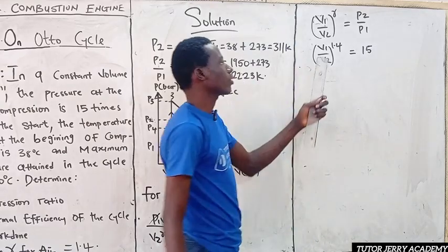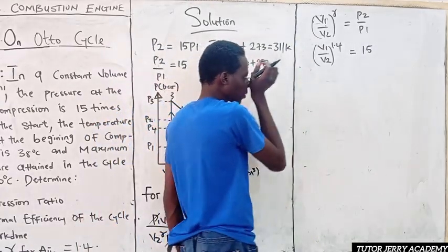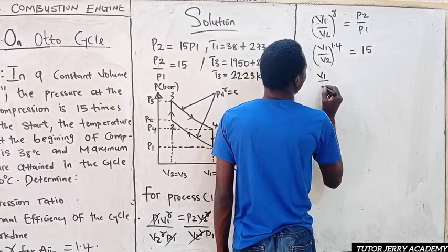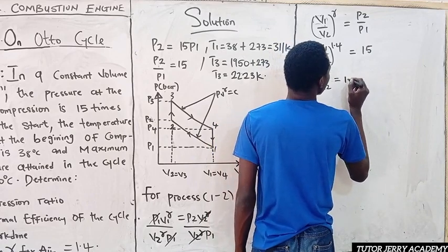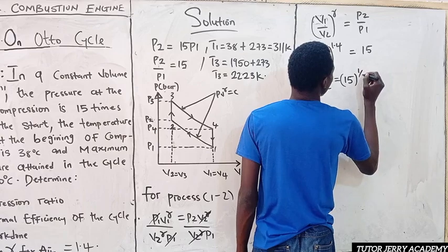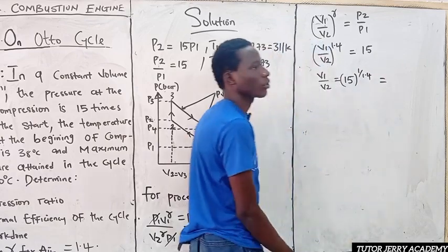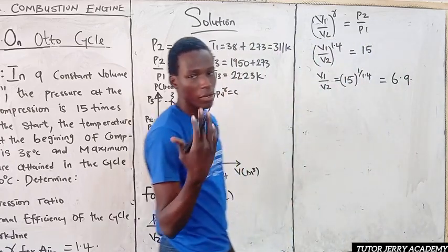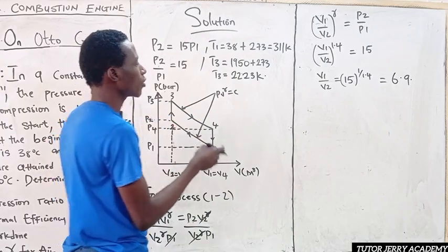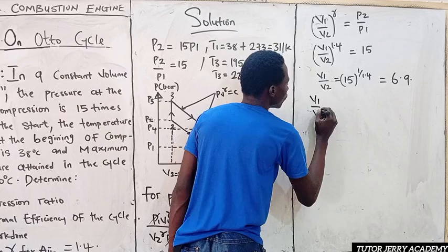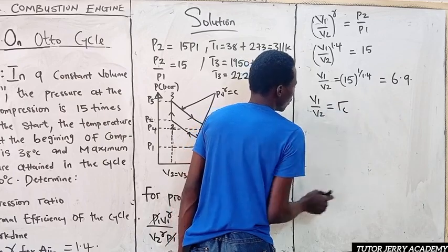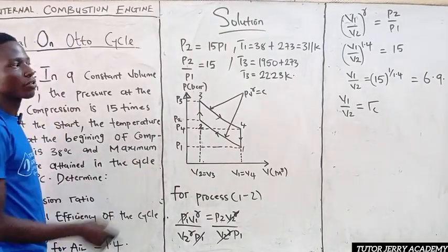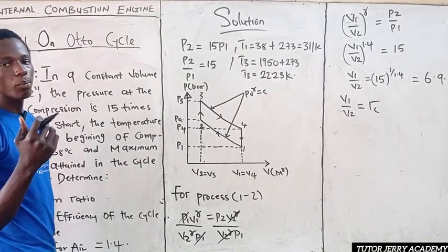To get the compression ratio V1/V2, we raise both sides to the power of 1/1.4. So V1/V2 equals 15 to the power of 1/1.4, which equals 6.9. The compression ratio, denoted R_C, equals V1/V2, which is 6.9.